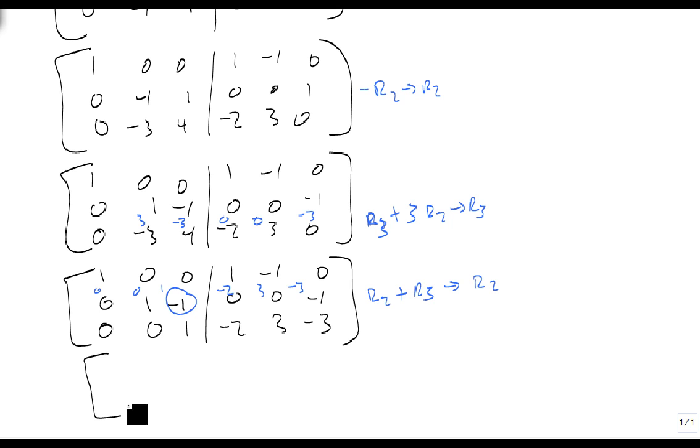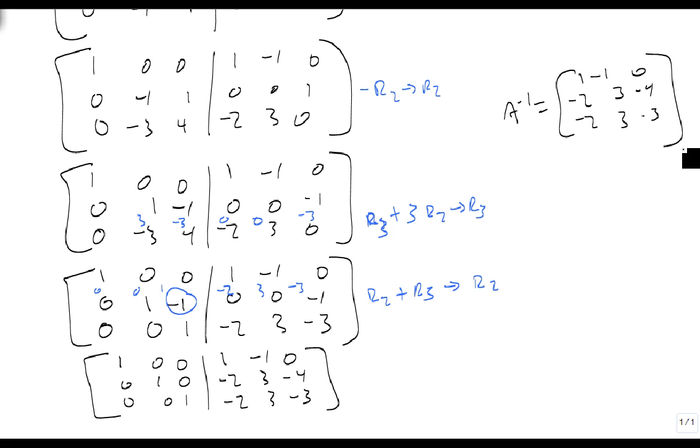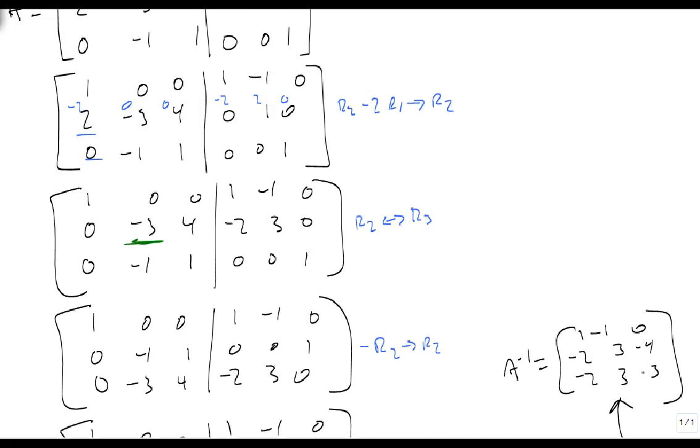And we get our final answer: 1, 0, 0, 0, 1, 0, 0, 0, 1. I have my identity matrix on the left now. 1, minus 1, 0, minus 2, 3, minus 4, minus 2, 3, minus 3. So my answer is A inverse is equal to 1, minus 1, 0, minus 2, 3, minus 4, minus 2, 3, minus 3.